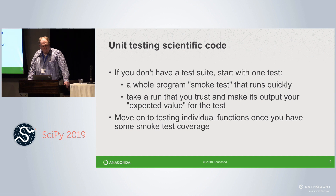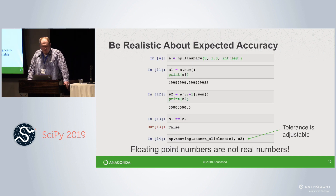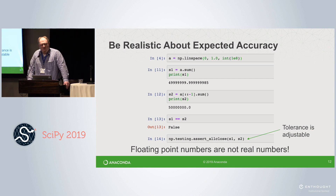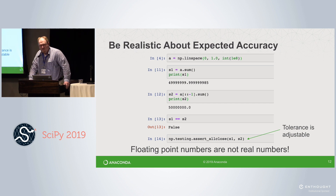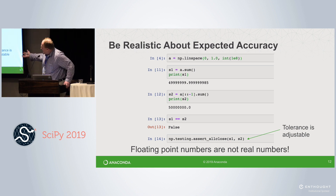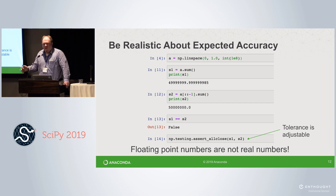One thing to note about unit testing scientific code especially: you have to be realistic about expected accuracy. Floating point numbers aren't real — they're not associative. If you add them up in a different order, you get slightly different answers because of rounding. So if your unit test checks if one way exactly equals the other way, you'll get false. I encourage you to look at the NumPy testing sub-module — the allclose method is a great way to tweak the tolerance and say this is still correct if it's within 1e-6 or whatever threshold makes sense for your problem.